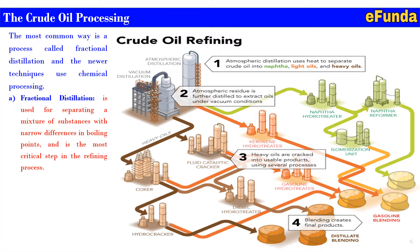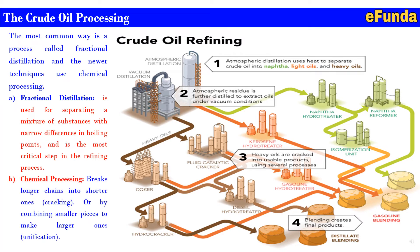Chemical processing breaks down longer chains into shorter ones by cracking, or combines smaller pieces to make larger ones — that is unification. In the picture: first, atmospheric distillation uses heat to separate crude oil into naphtha, light oil, and heavy oil. Second, atmospheric residue is further distilled to extract oil under vacuum conditions. Third, heavy oils are cracked into usable products using several processes. Fourth, blending creates the final product.